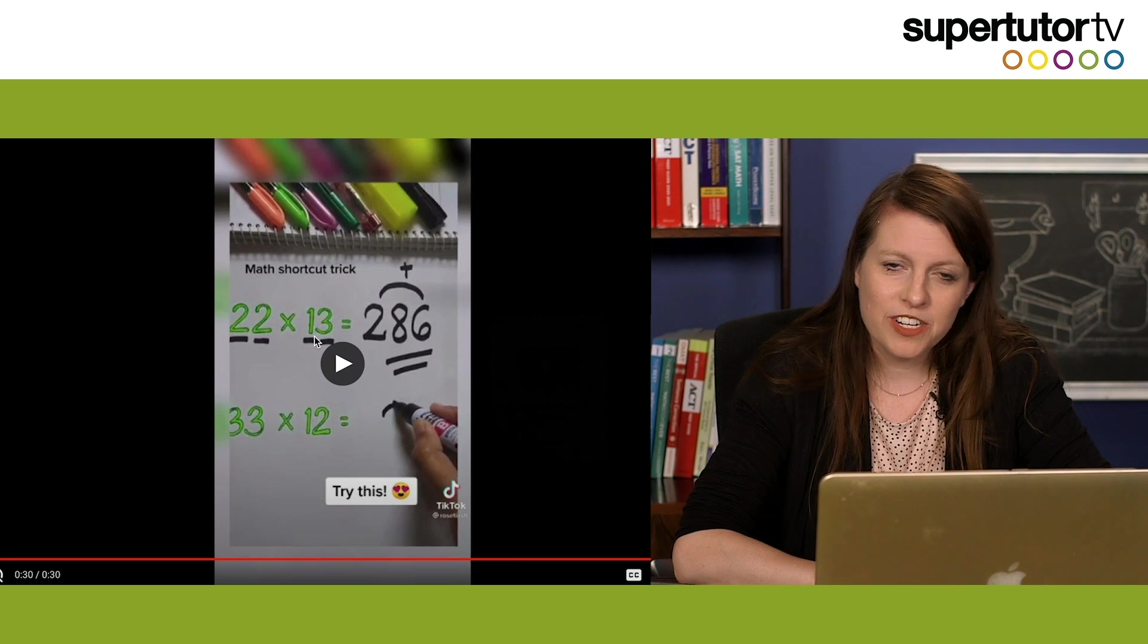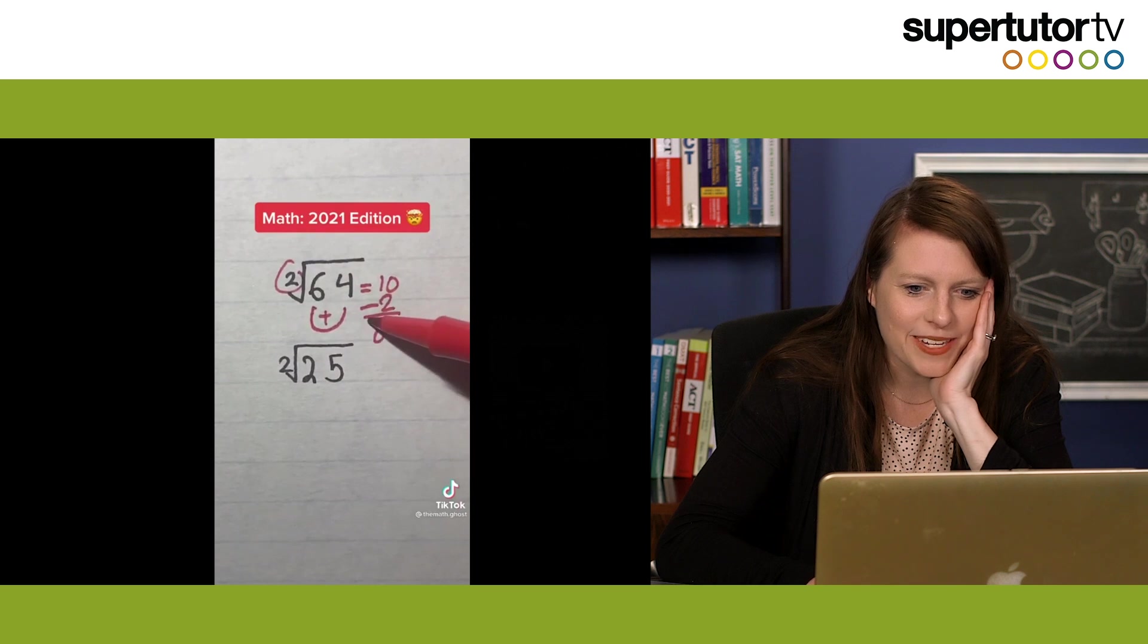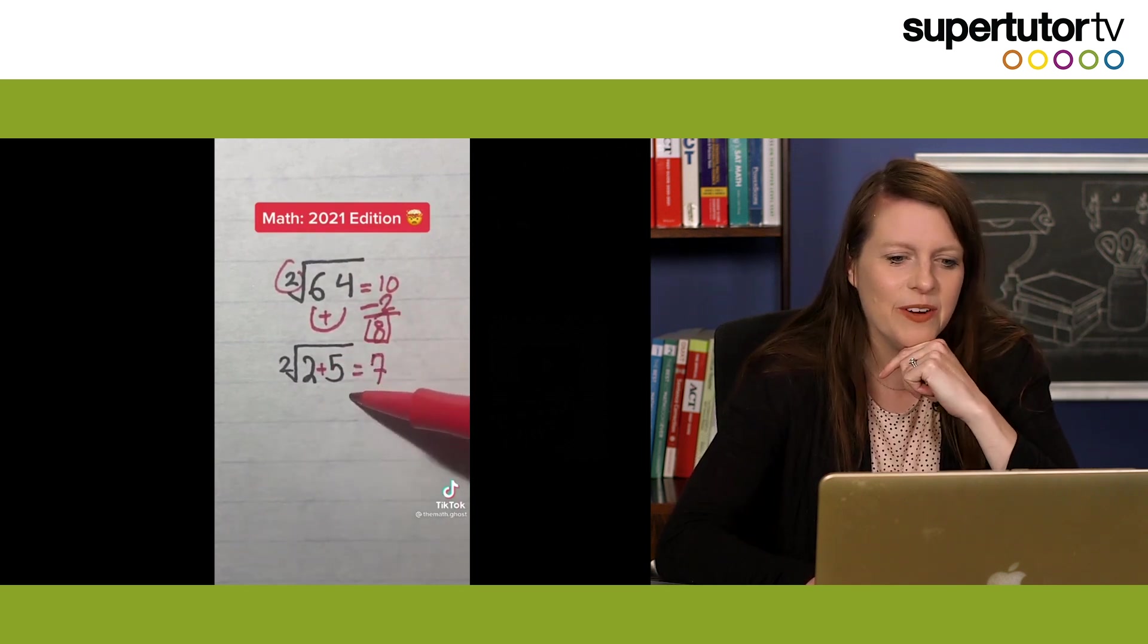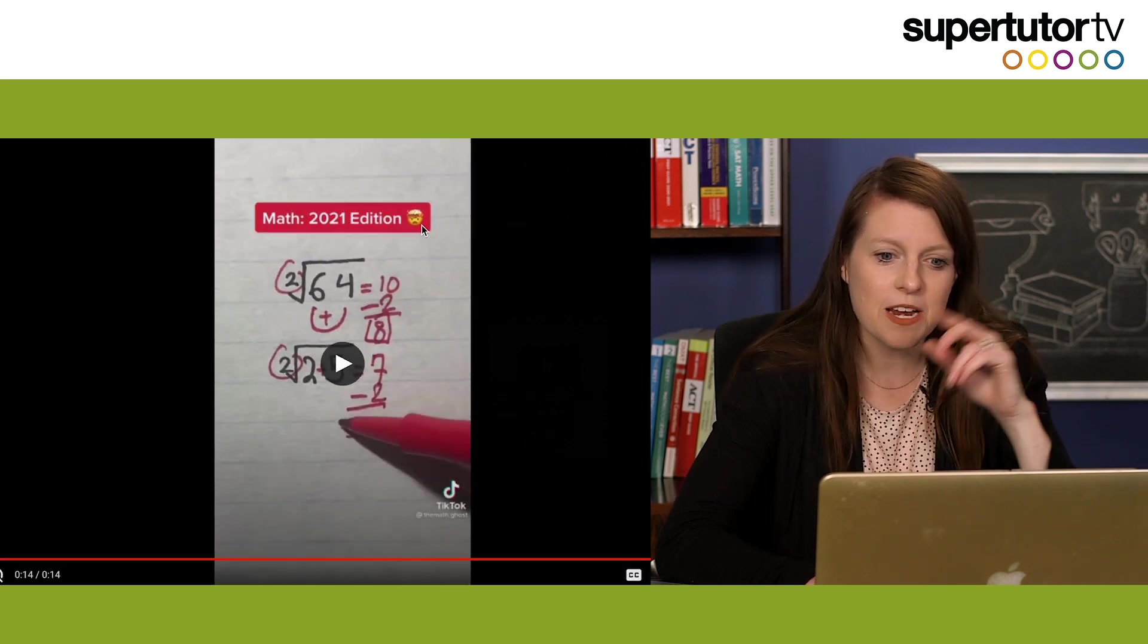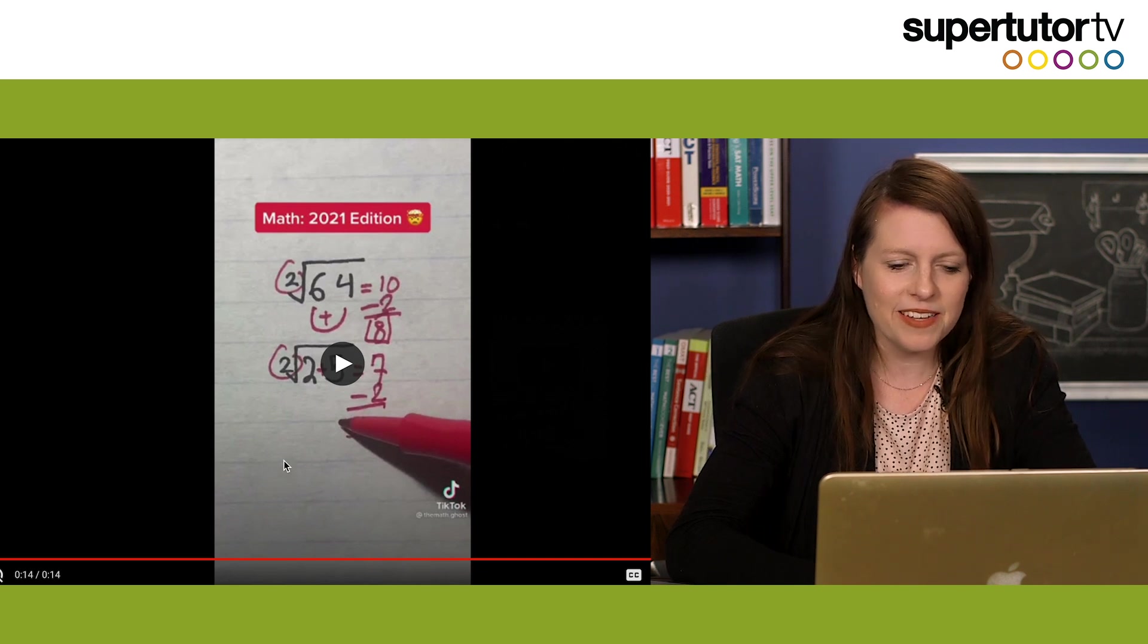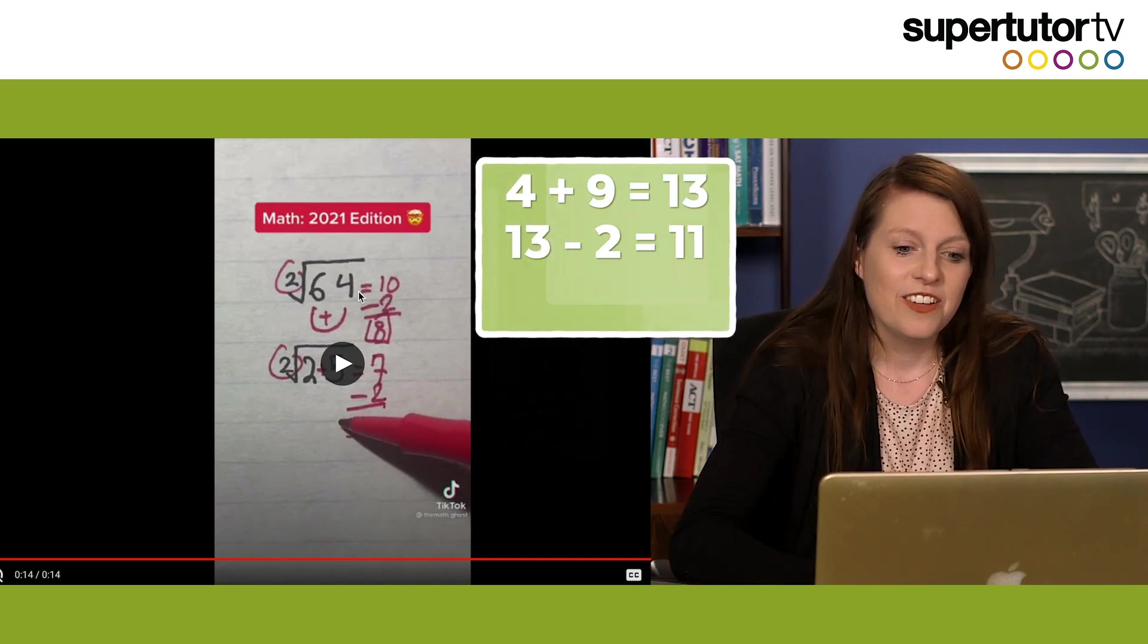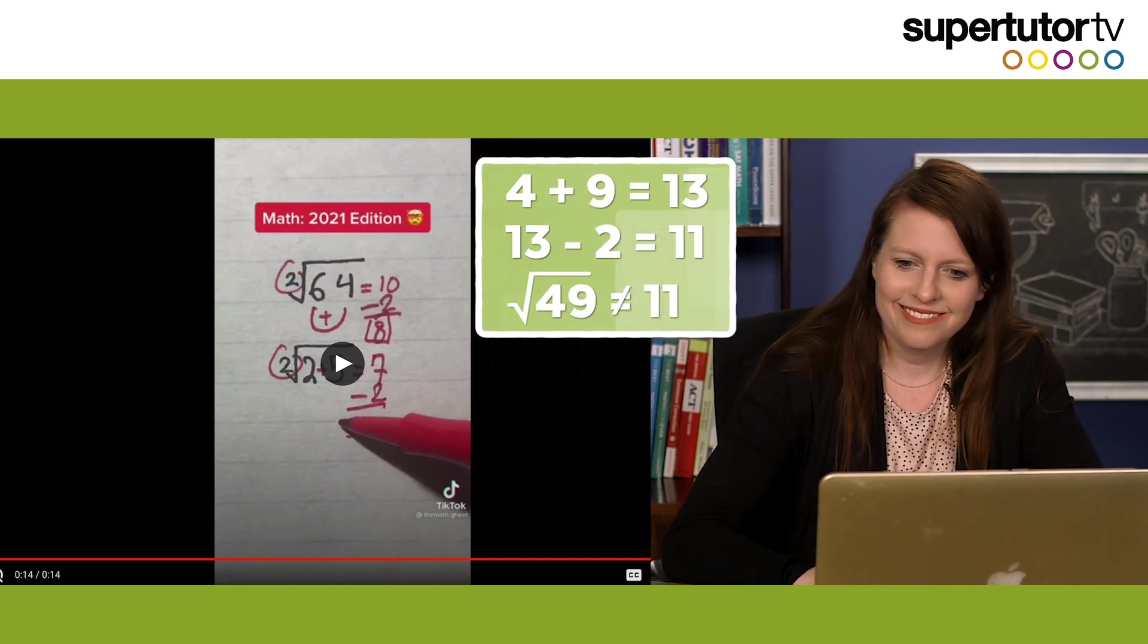Try this. Math shortcut trick. But she has pretty pens. Square root of 64. Oh, I love these. This is super craptastic. 10. And then we randomly subtract two to get eight. Okay, so here we have two plus five is 25. Math 2021 edition. And this is the mind blown emoji. By the way, your mind will be blown if you do math on TikTok. And now I'm going to blow your mind even more because let's do 49, right? Four plus nine is 13. 13 minus two is 11. Square root of 49. It's not 11. Mind blown, everybody.